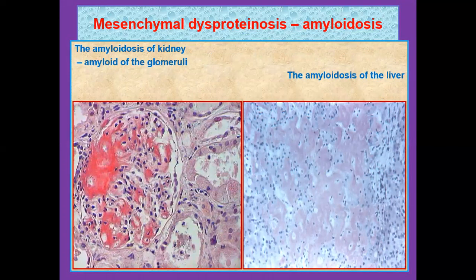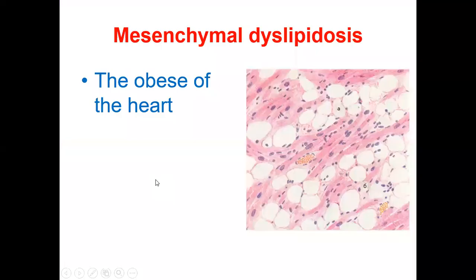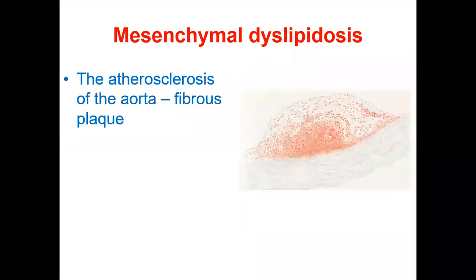This is the amyloidosis of the liver and the kidney shown in the picture. Talking about characteristics, abscess of the heart is common among the symptoms, as well as atherosclerosis of the aorta and fibrous plaques.